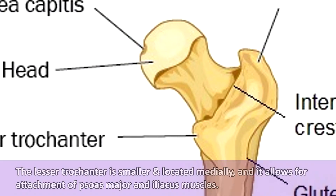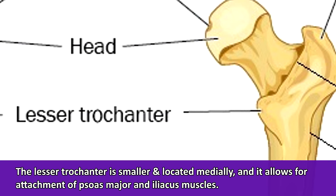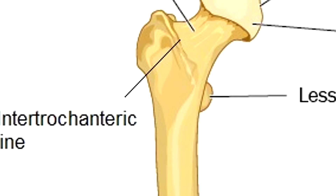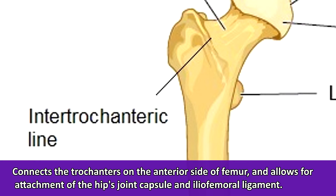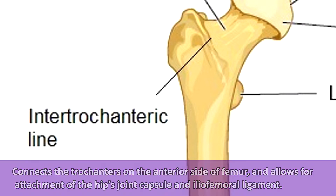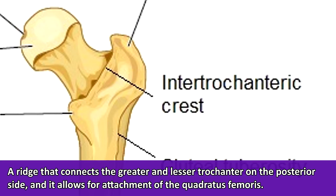The lesser trochanter is smaller and located more medially on the posterior region of the femur, and it allows for the attachment of muscles as well. The intertrochanteric line connects the trochanters on the anterior side of the femur, and it allows for the attachment of the joint capsule of the hip as well as the iliofemoral ligament. The intertrochanteric crest is a ridge connecting the greater and lesser trochanter on the posterior side, and it allows for the attachment of the quadratus femoris.